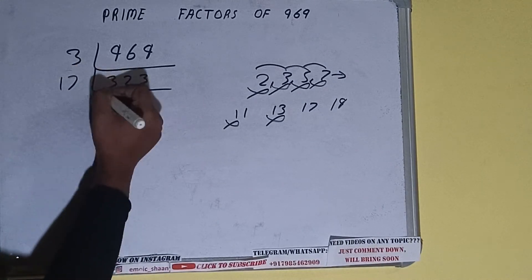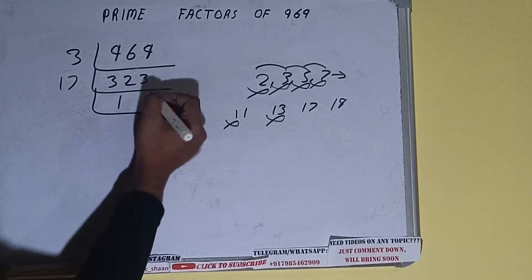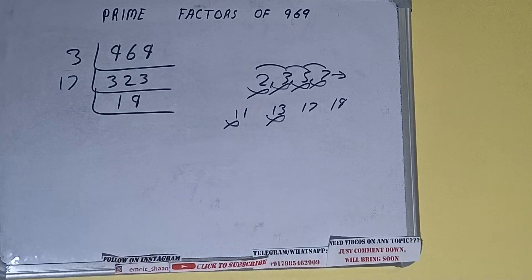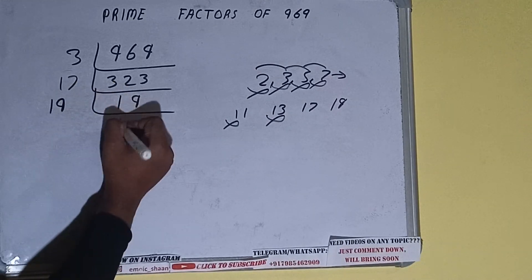It is divisible by 17. So divide it and we'll be having 19. 19 is a prime number, so it is only divisible by itself, that is 19.